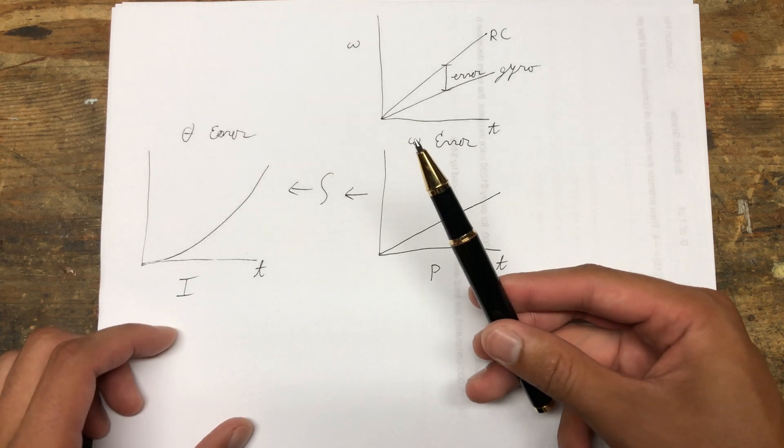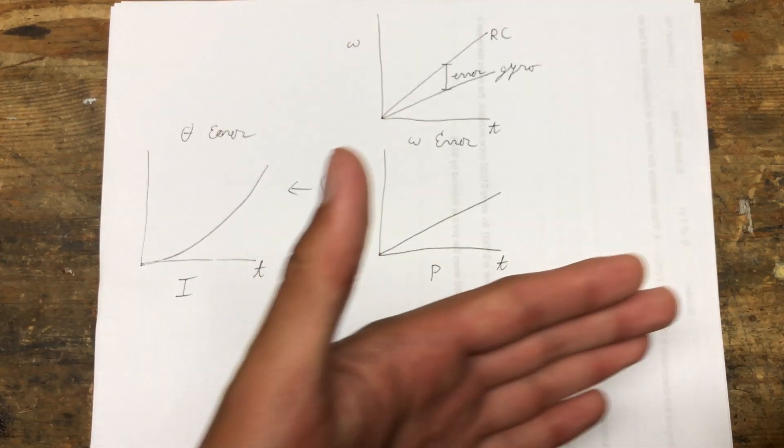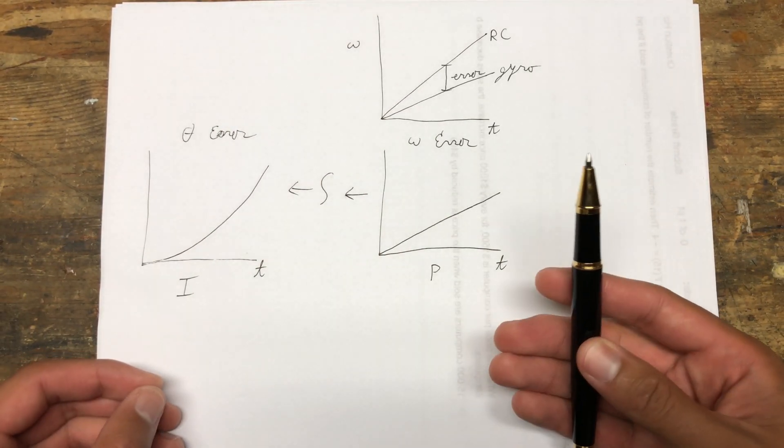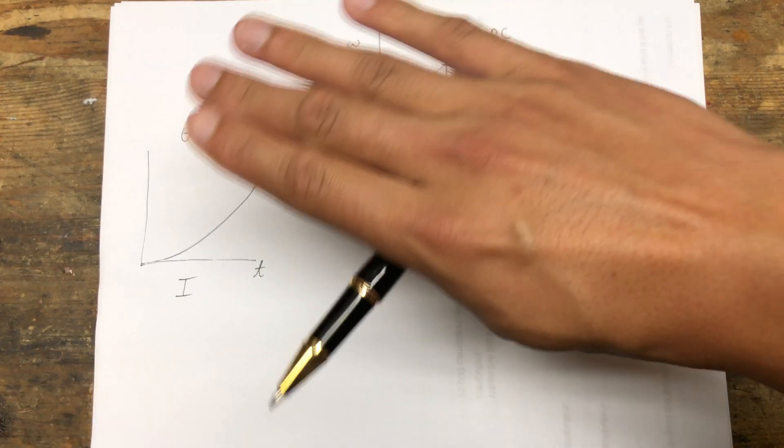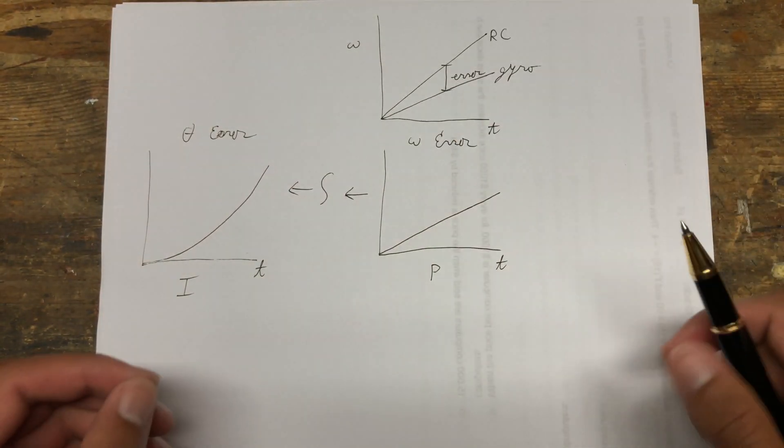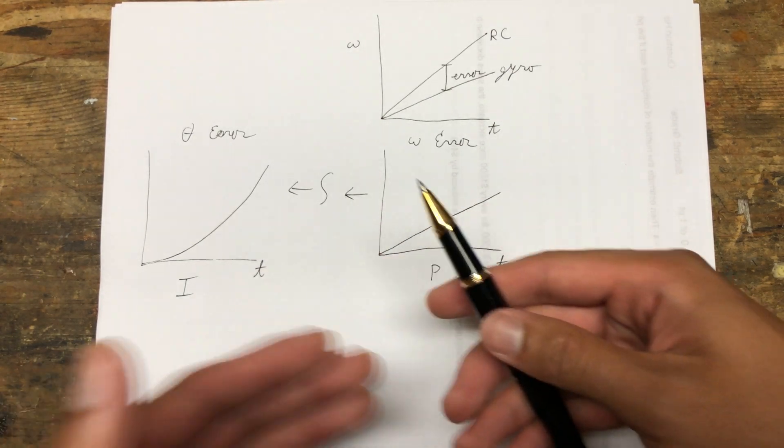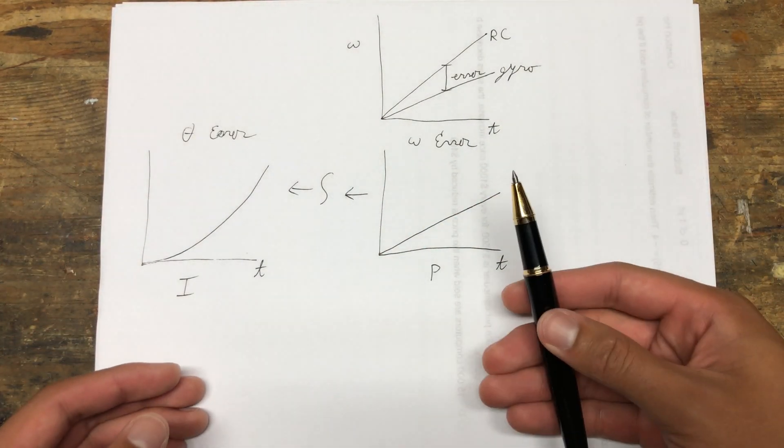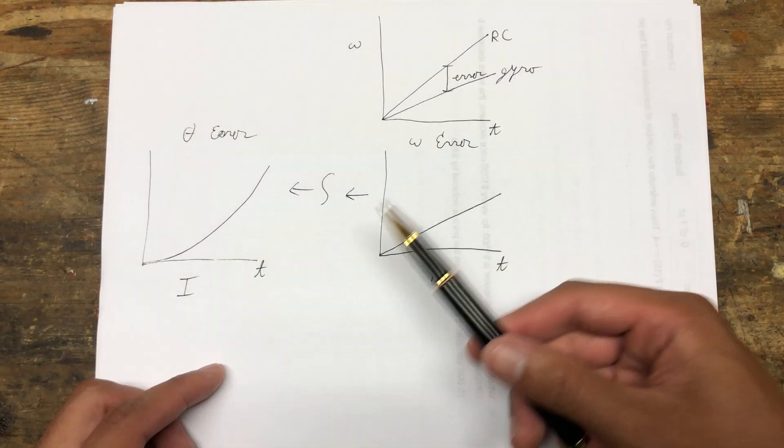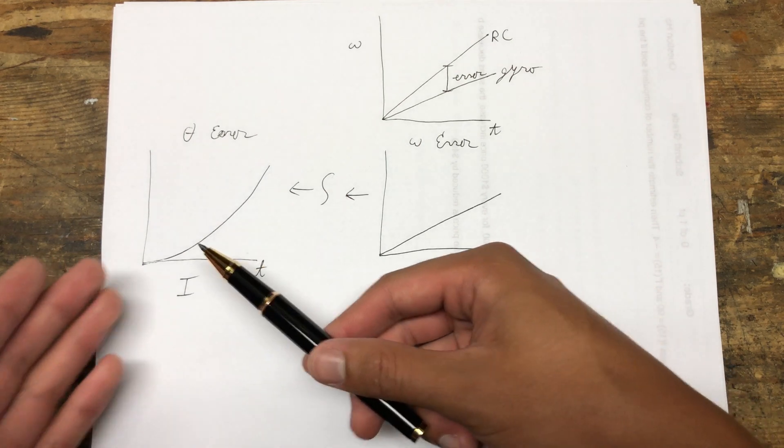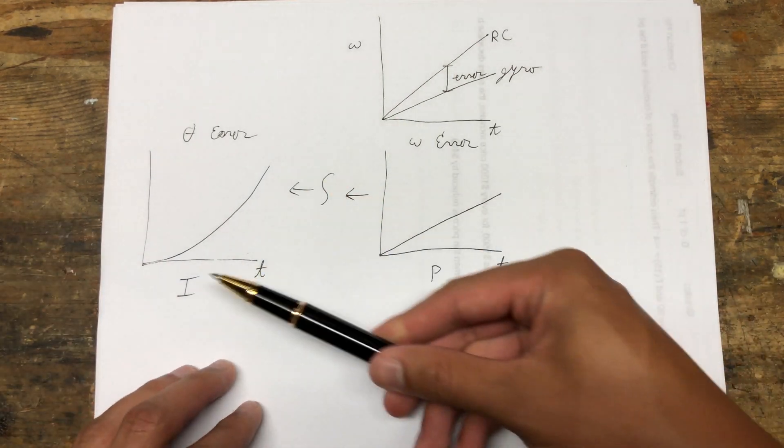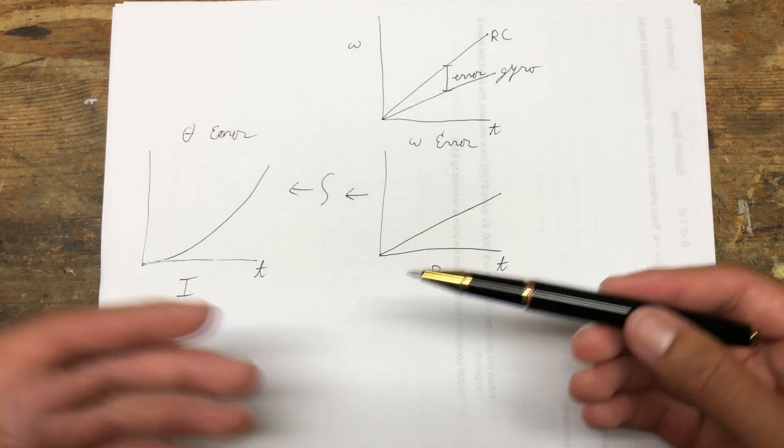For example, if maybe your battery is too far rearwards on your quad, then your quad will have a tendency to pitch up slowly. That kind of error accumulates slowly over time, and because it accumulates over time and integrals look at the area under the curve over time, then the I-term is very good at reacting to that kind of error.